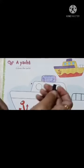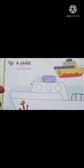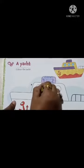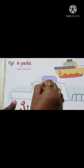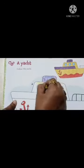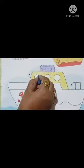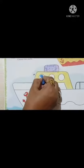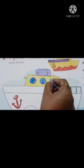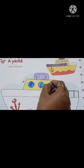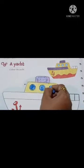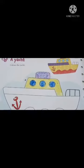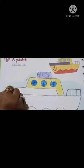Take the next color, yellow. See, start. Next, take blue color. Now start coloring blue. See children, blue color is completed. Now take the next purple color and start coloring.